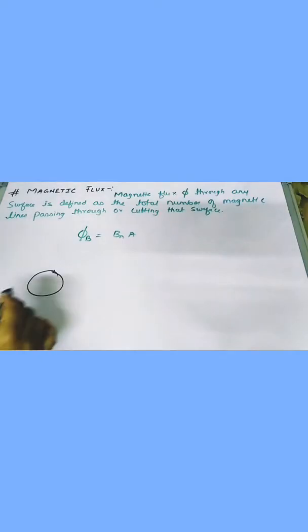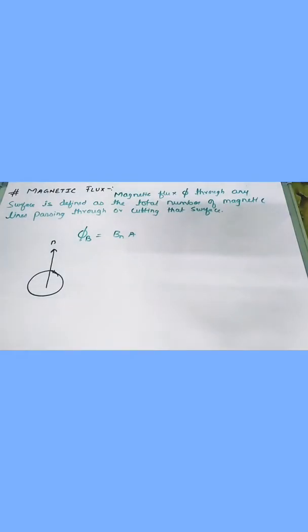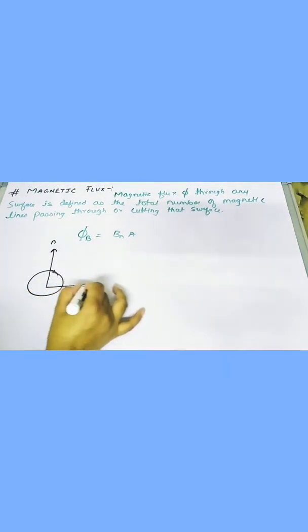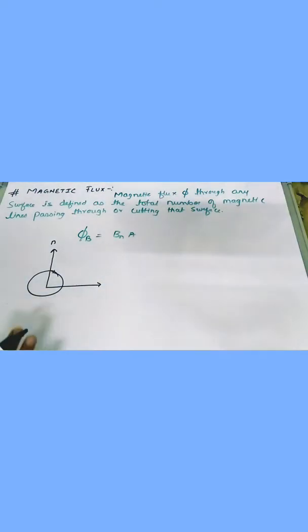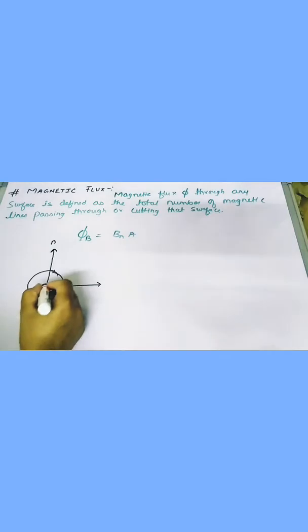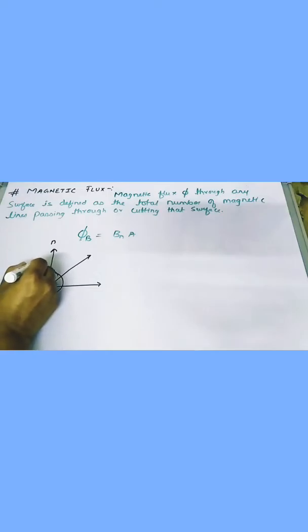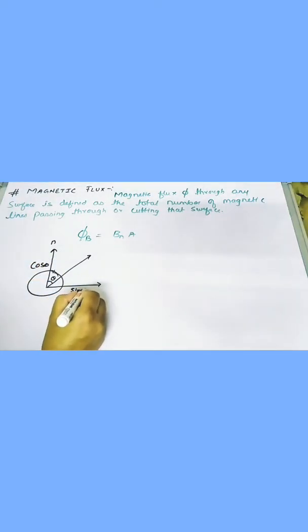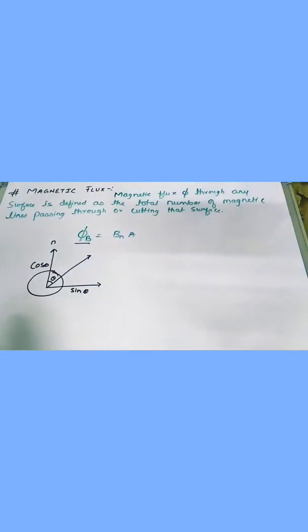Now understand what happens. Suppose this is my surface area. If I draw a perpendicular to it, this is my perpendicular component and I call it N. You can see there is a parallel line and I have drawn two lines — one parallel to the surface and one perpendicular to the surface. The resultant makes some angle theta. So this will be my cos component and this will be my sin component. When the number of field lines passing perpendicular to that surface area, that gives the magnetic flux. The current produced in the coil is because of the change in the magnetic flux.